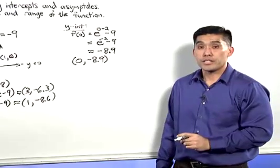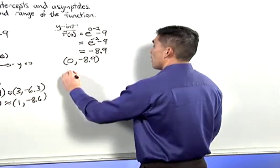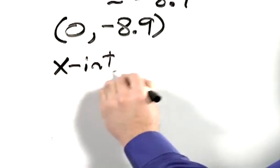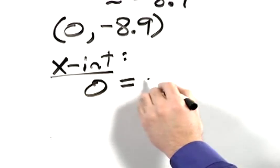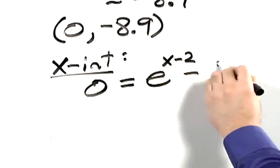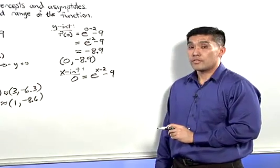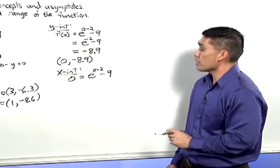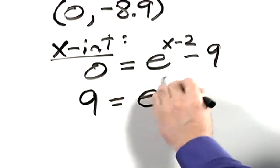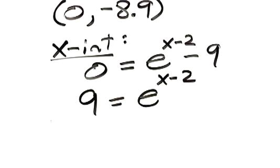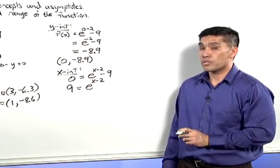Let's now find the x-intercept. The x-intercept occurs when y is 0. When y is 0, we end up with 0 equals e to the x minus 2 power minus 9. Let's solve this. To solve for x, we add 9 to both sides of the equation. 9 equals e to the x minus 2 power. Now, in order to solve for x, we take the natural log of both sides.